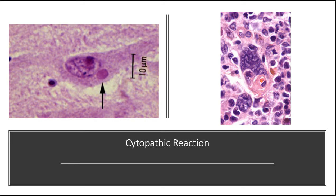Focal cell damage in the skin may cause epithelial cells to become detached, forming blisters. Some viruses can cause epithelial cells to proliferate, as in cases of venereal warts caused by HPV or the umbilicated papules of molluscum contagiosum caused by pox viruses. Finally, viruses can contribute to the development of malignant neoplasms.